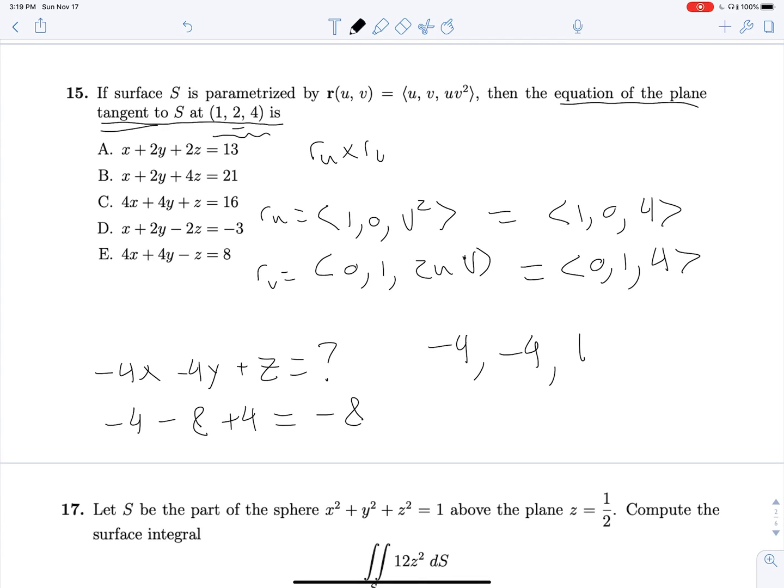And so then we look up here and we see this answer that we've come to, negative 4x minus 4y plus z equals negative 8, is exactly the opposite of answer choice E. And in fact, if we move everything on to a different side, we will see that these two are equivalent.